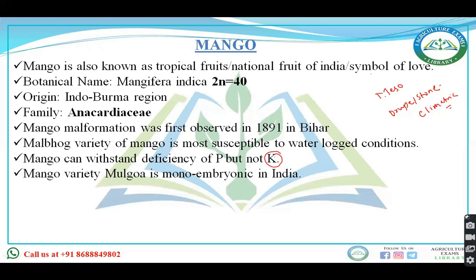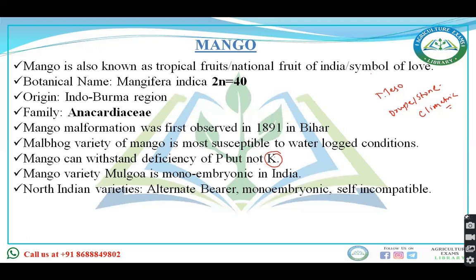One seed gives rise to many seedlings in the case of polyembryonic. When you talk about the North Indian varieties, they are alternate bearer, monoembryonic, and self-incompatible.